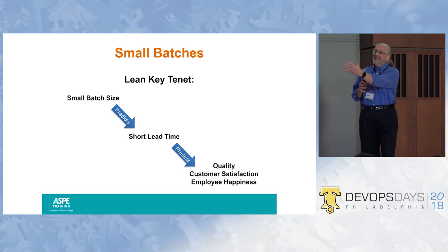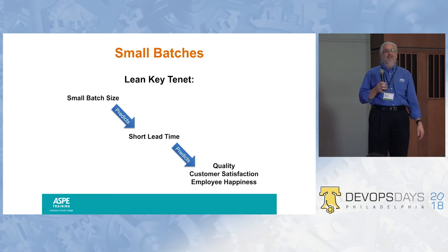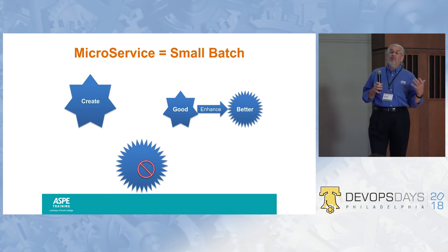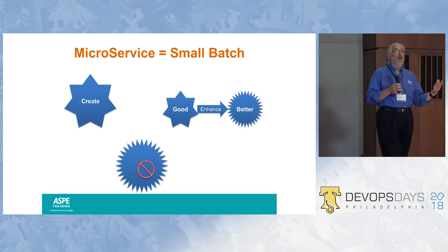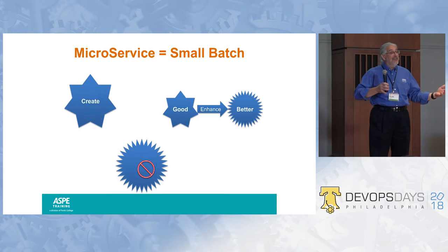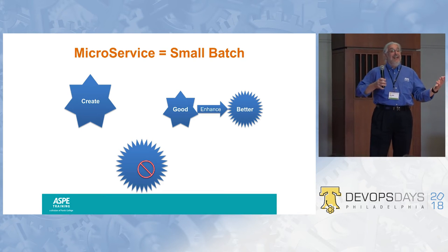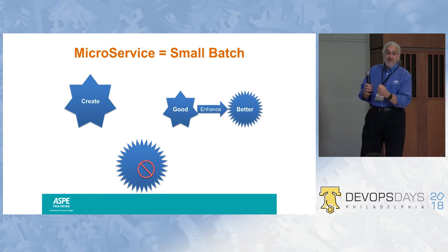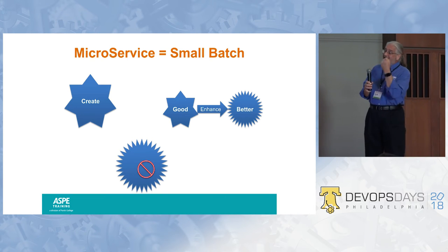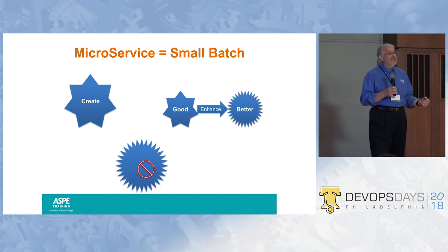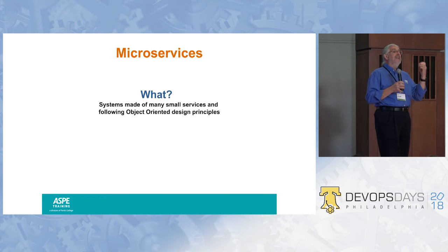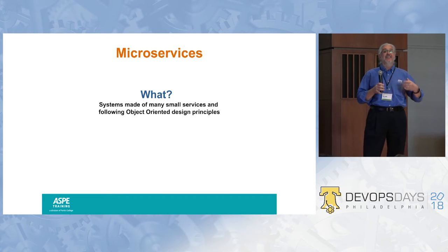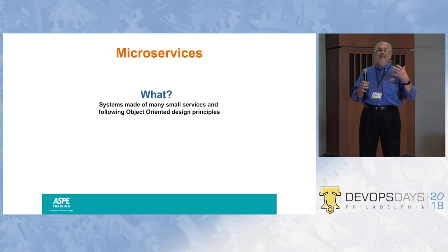The lean community has given us these key tenets: if we're going to achieve quality and customer satisfaction, we need to be working in small batches. Service-oriented architecture and indeed microservices gives us that opportunity — creating a new service, extending a service, or fixing a bug in a service are always going to be small chunks of work, which enables us to do it quickly and easily.